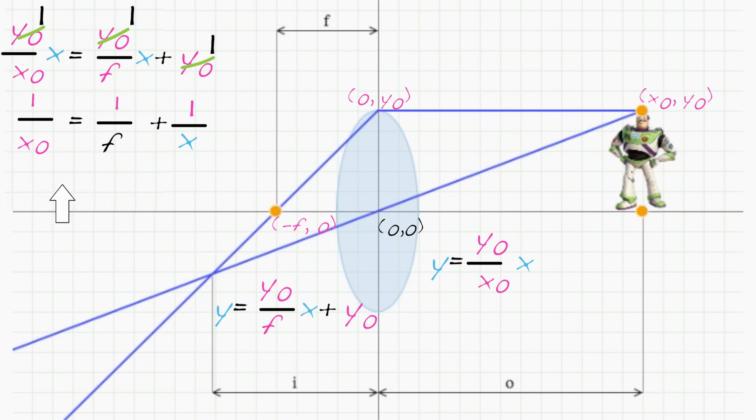Our diagram also tells us that x0 is equal to the object distance o. So we have 1 over o equals 1 over f minus 1 over i, which we usually rewrite as 1 over o plus 1 over i equals 1 over f.